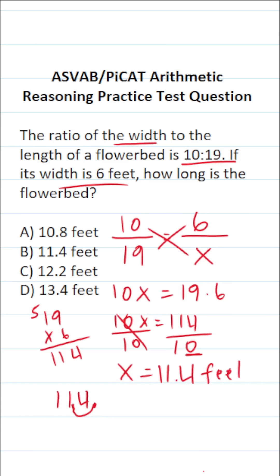So in other words, if this flowerbed has a width of 6 feet, its length is going to be 11.4 feet, which is answer choice B.